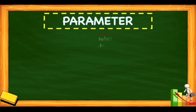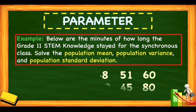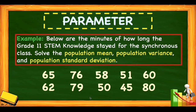For our example situation: below are the minutes of how long the Grade 11 STEM students stayed per synchronous class. This given data is from 10 students and their duration in minutes. The given values are 65, 76, 58, 51, 60, 62, 79, 50, 45, and 80.